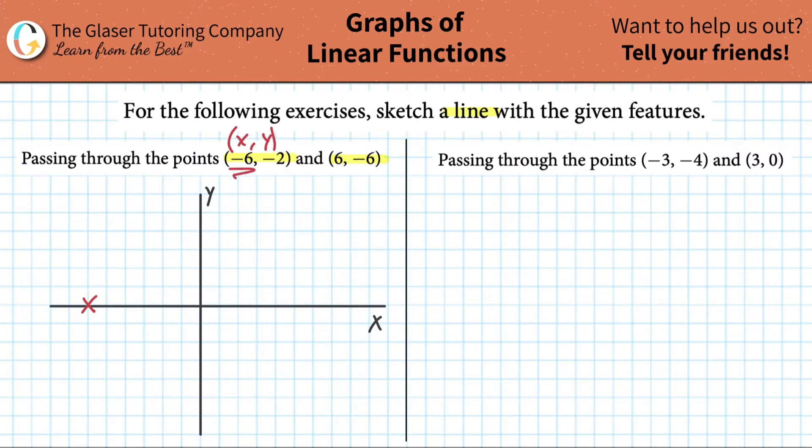So now don't forget to plot the y. We went out 6 units on the x axis. Now we have to go down 2 units on the y axis. Why down? Because it's negative. Down is negative, up is positive. So I got to go down 2 units and it looks like right here. That's where I'm going to be plotting my point now. This point has a coordinate of (-6, -2).